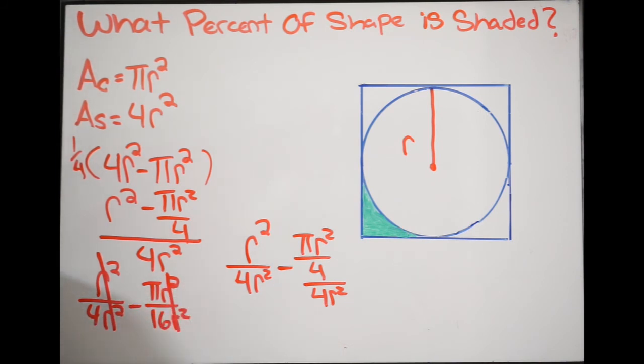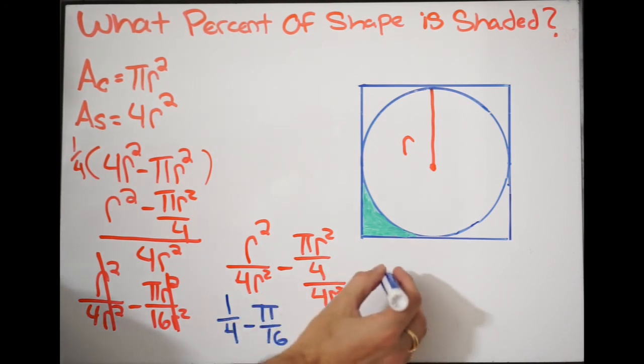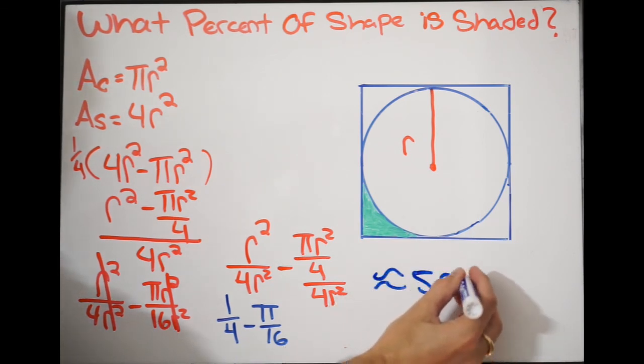We have 1 over 4, so 1 over 4 minus pi over 16. And what you want to do now is put this into your calculator because, again, they want the percent. So putting this into our calculator, we're going to get the following: a quarter minus pi over 16. And then what we want to do here is multiply our answer by 100 because they want it as a percent. And you're going to get the following here. So I'm going to go ahead and round this. So I'm just going to say about 5.37%.